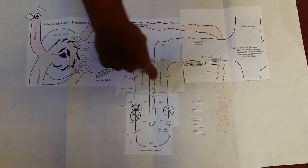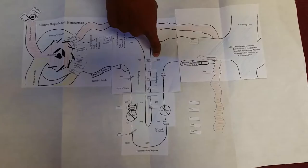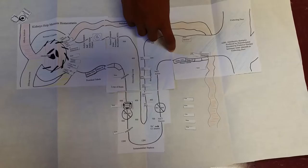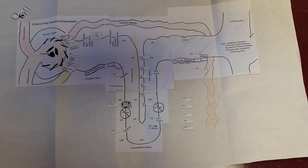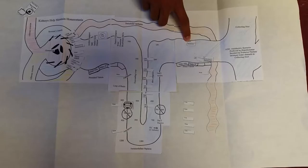After the loop of Henle, the filtrate makes its way to the distal tubule where water and salts are reabsorbed into the bloodstream and secreted. This is helped by the hormone aldosterone which speeds up the process of reabsorption.